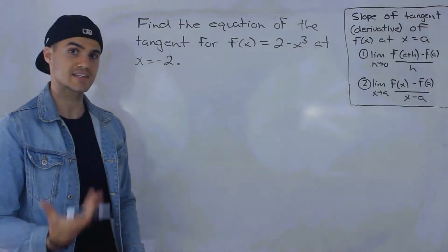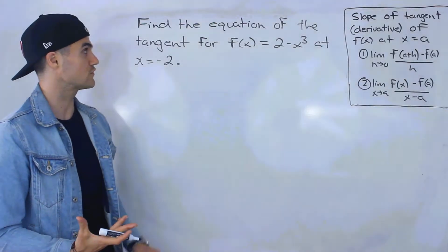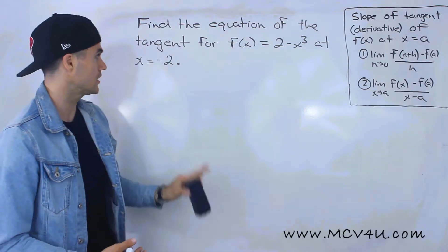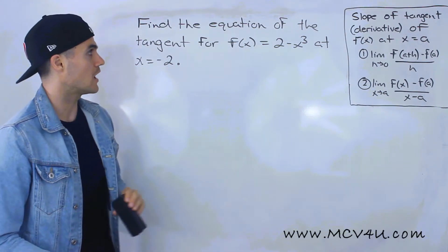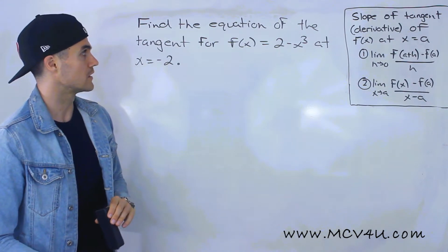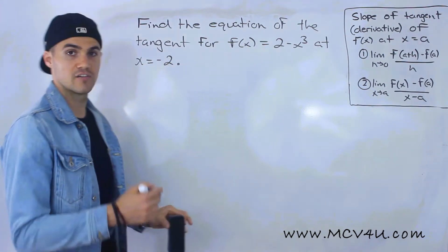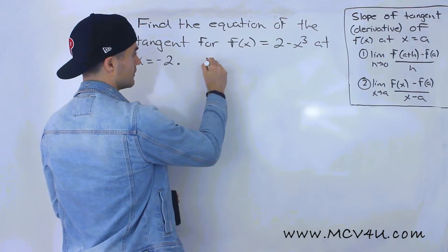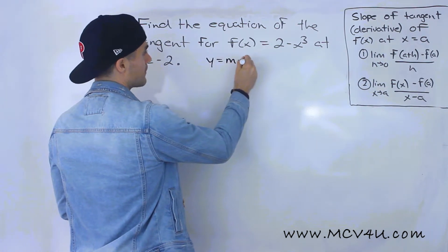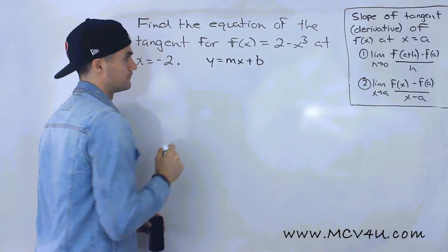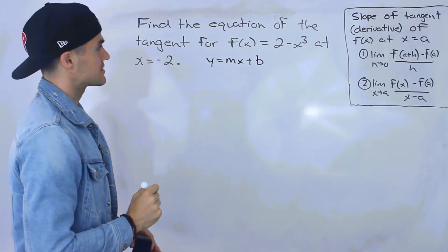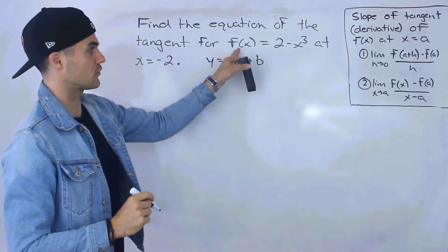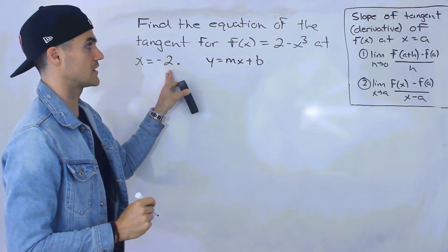Moving on to the next example, we have to find the equation of the tangent for this function 2 minus x to the power 3 at this x value of negative 2.